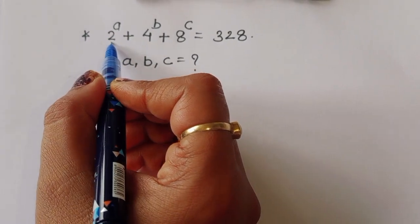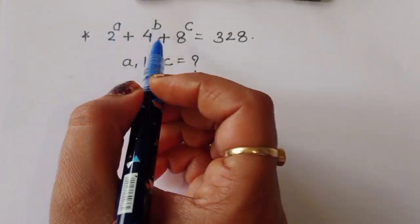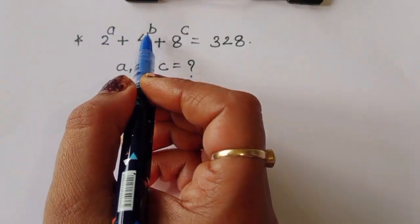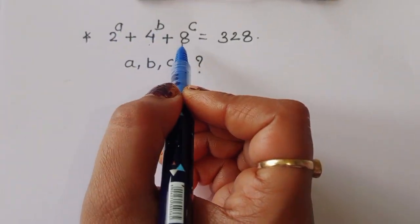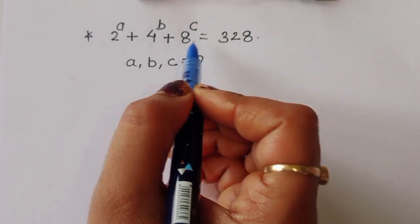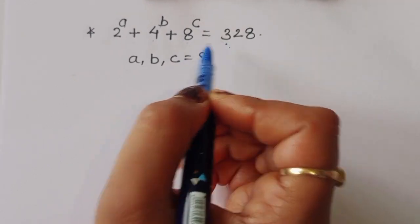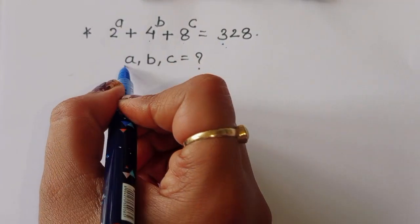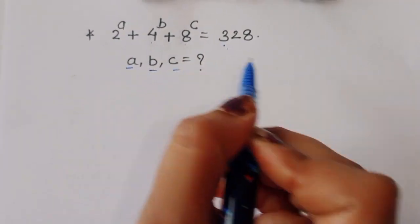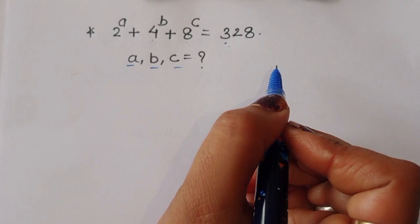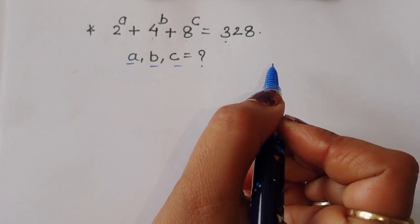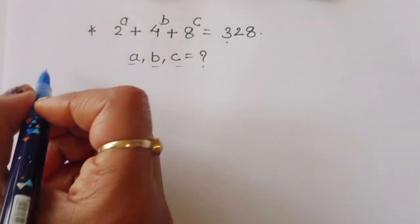The question is: given 2 power A plus 4 power B plus 8 power C is equal to 328, we have to find out the value of A, B, and C. Let's see the solution.